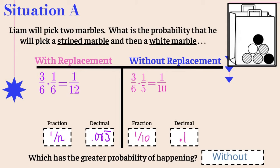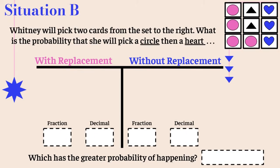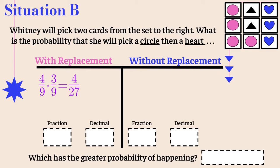Now let's look at situation B. Whitney will pick two cards from the set. What is the probability that she will pick a circle and then a heart? Again, we have with replacement and without replacement. For with replacement, there are four circles out of nine cards. We put it back, so we still have nine cards, and three of them are hearts. Four times three over nine times nine reduces to 4 over 27.